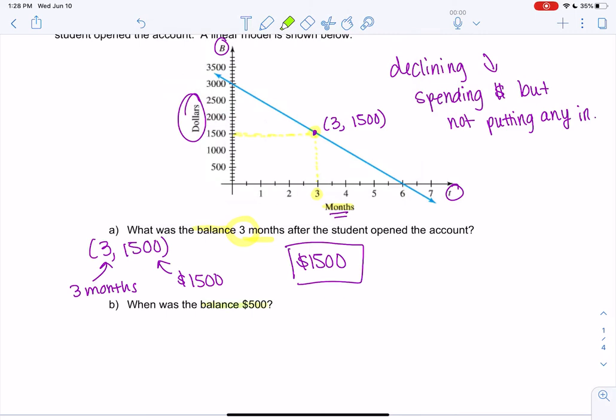And then let's do one more. Now we know the balance is 500, but we want to know when. So since we know the balance, I'm going to go to the vertical one. I'm going to go to 500. I'm going to go over until I hit the line, go down to months. And it looks like we get five months.